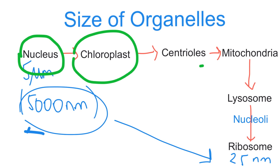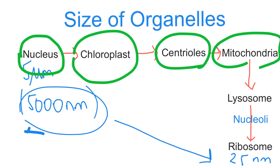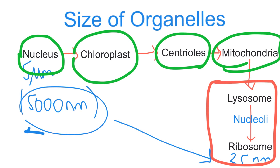The nucleus can be seen, but not the double membrane of the nuclear envelope. Chloroplasts can be seen, but not the double membrane. Centrioles can be seen, but not as a pair. Mitochondria can be seen, but not the double membrane. These organelles can be seen by the light microscope; any organelles smaller than these can only be seen by the electron microscope.